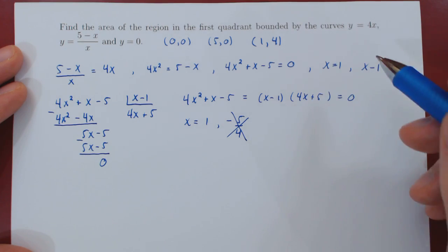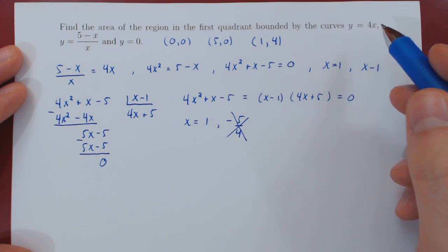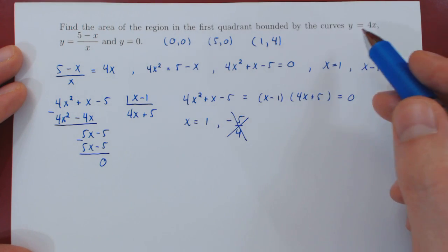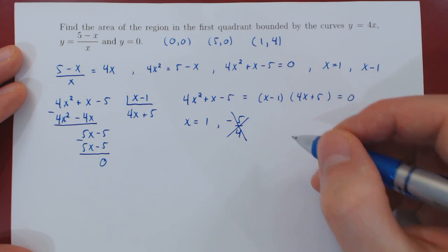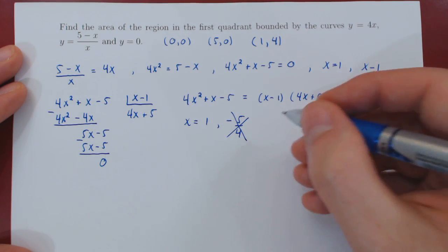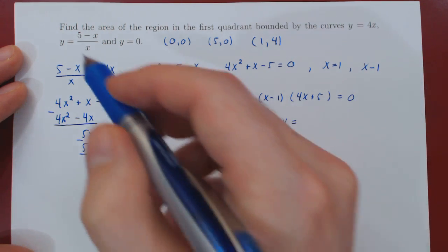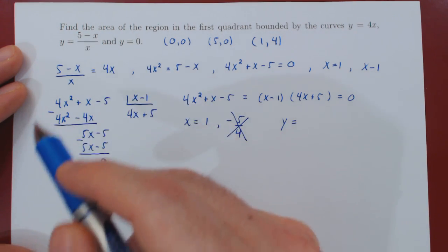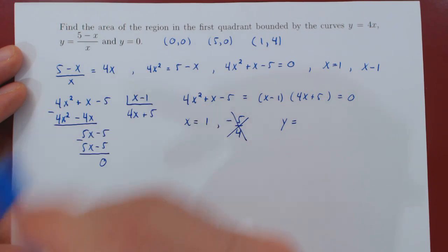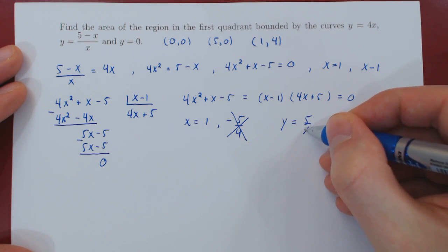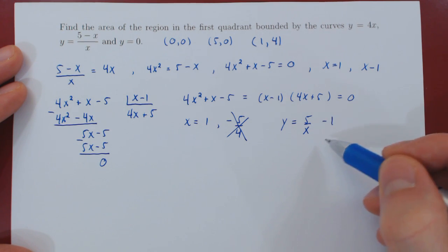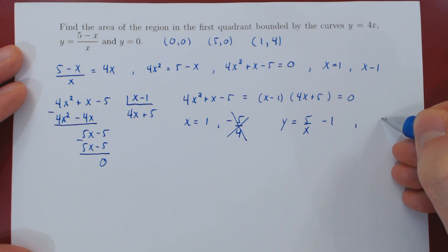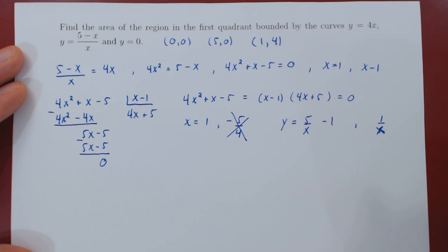Before we sketch these three curves and the points of intersection, these two lines are very easy to sketch. This one may look a little bit more puzzling, but we can rewrite it slightly differently to make this curve look more familiar. The idea is simply to divide through 5 and x by x, so we obtain 5 over x minus x over x, which is 1. Now this should look more familiar.